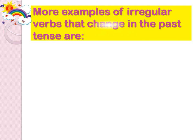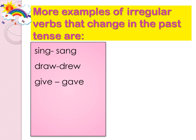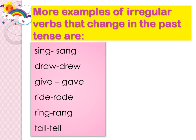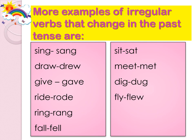Here are more examples of irregular verbs that change in the past tense. Sing changes to sang. Draw changes to drew. Give changes to gave. Ride changes to rode. Ring changes to rang. Fall changes to fell. Sit changes to sat. Meet changes to met. Dig changes to dug. Fly changes to flew. Speak changes to spoke.